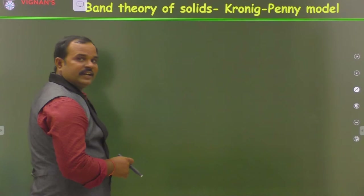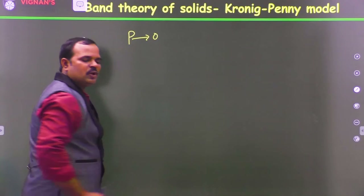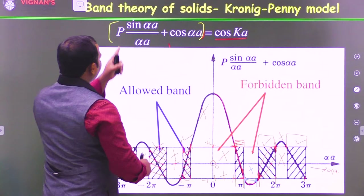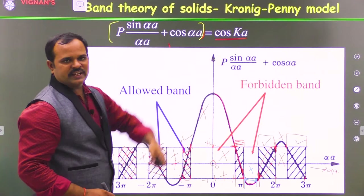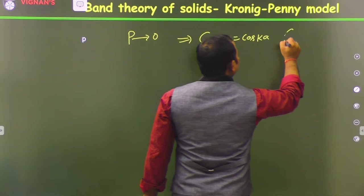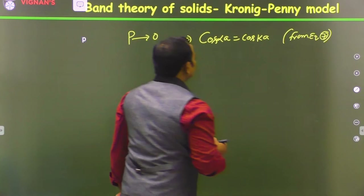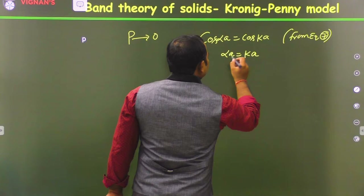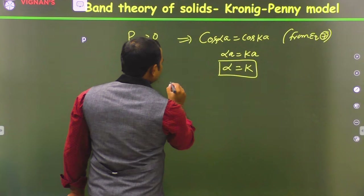Now, if P tends to 0, what happens? If P tends to 0, the whole term P·(sin αa / αa) becomes 0, so the equation reduces to cos αa = cos ka. This is from equation 7. That is only possible when αa = ka, meaning α = k, so α² = k².